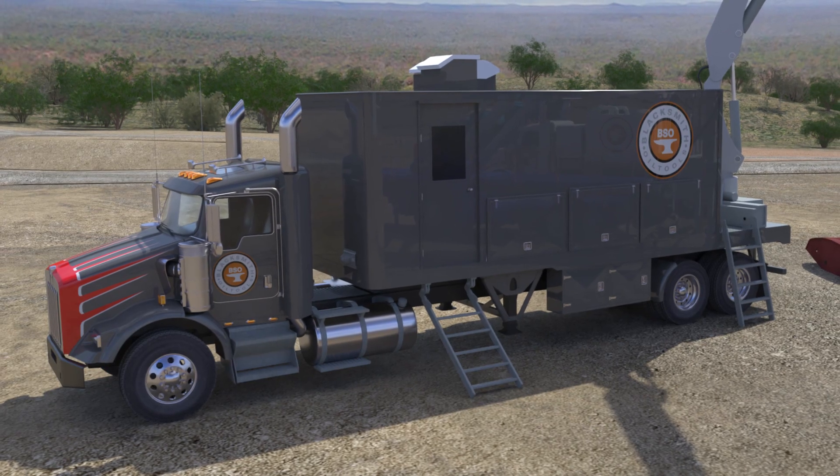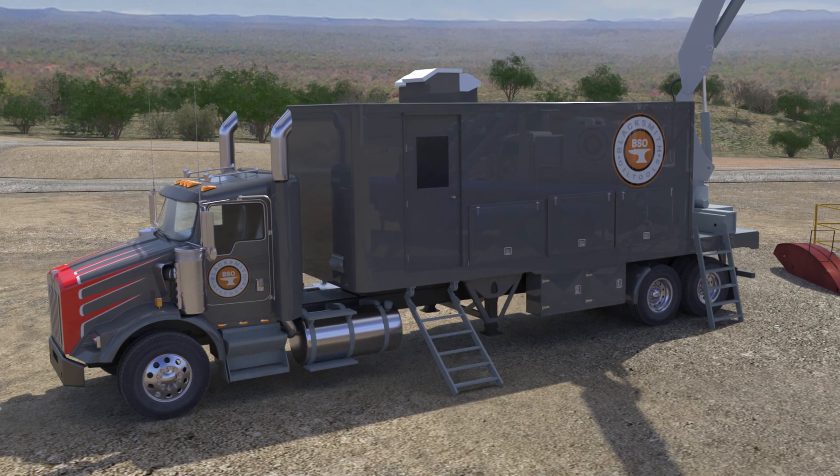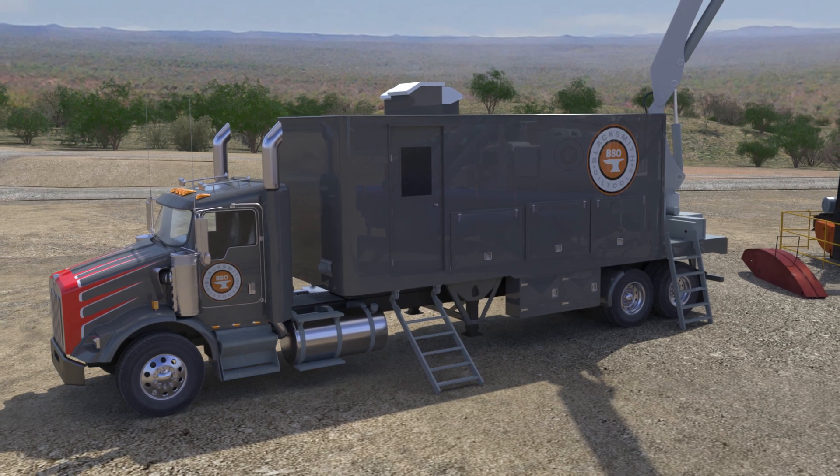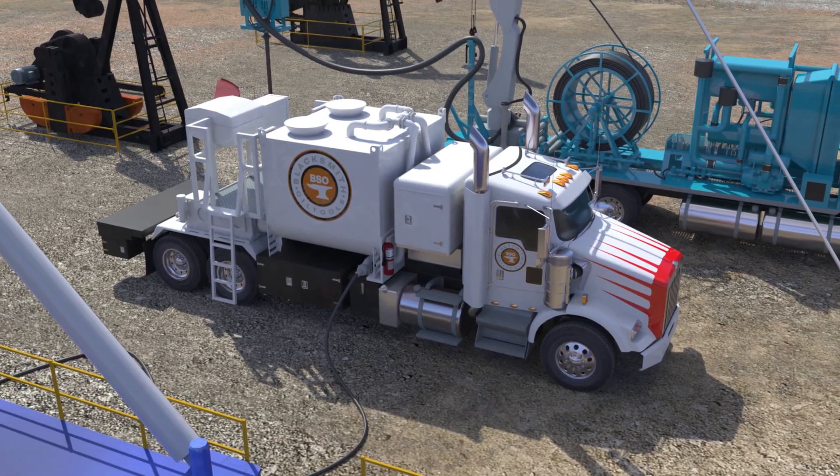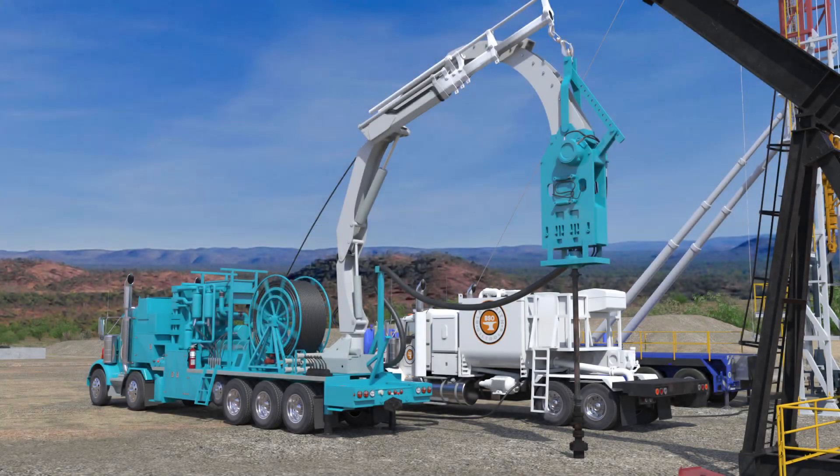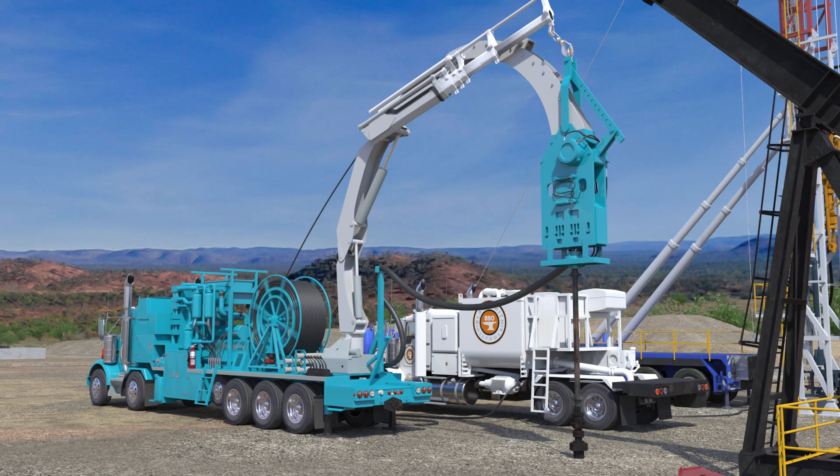A wireline unit can't pump cement down, but they can send an electrical charge to a perforator gun to blast holes in the casing for the cement to be pumped into. Blacksmith oil tools has combined the advantages of the rig, wireline, and coil into one tool to create a painless method to plug a well.